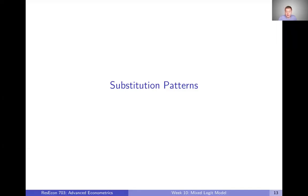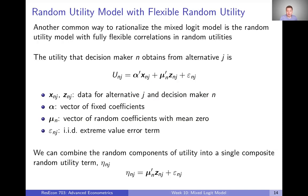In the last video, we talked through one of the common ways to rationalize the mixed logit model. Now we're going to look at another common way to do that, which is to generate flexible substitution patterns amongst our alternatives. The way to think about this is that we're trying to create fully flexible correlations among random or unobserved utilities in our model.